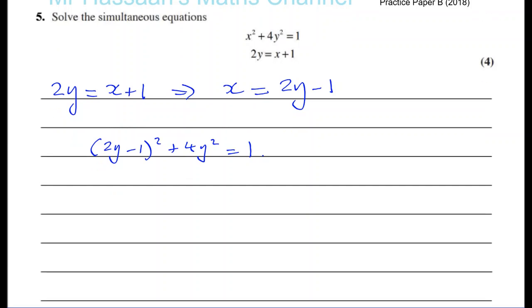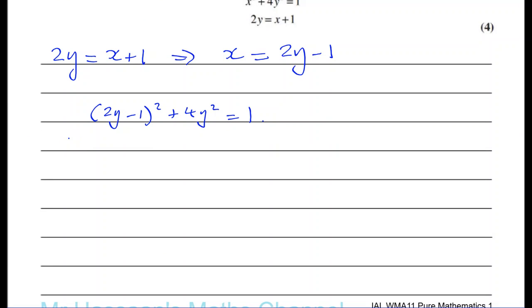So I can square this bracket here. So I'm going to get 4y squared minus, I'll have 2 times 2y times minus 1, which is going to give you 4y, and minus 1, which is going to give you plus 1 when you square it. And then you're going to have plus 4y squared equals 1. So if you combine the like terms, you have 8y squared minus 4y, and then if you try to bring the 1, if you subtract 1 from both sides, you will be left with no constant term. You have 8y squared minus 4y equals 0.